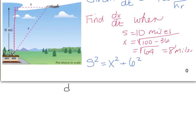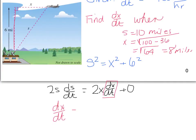Now when I get dx/dt by itself, this is going to give us dx/dt is equal to 2s divided by 2x ds/dt. And with that, our 2s are going to cancel, and we are left with s divided by x times ds/dt.